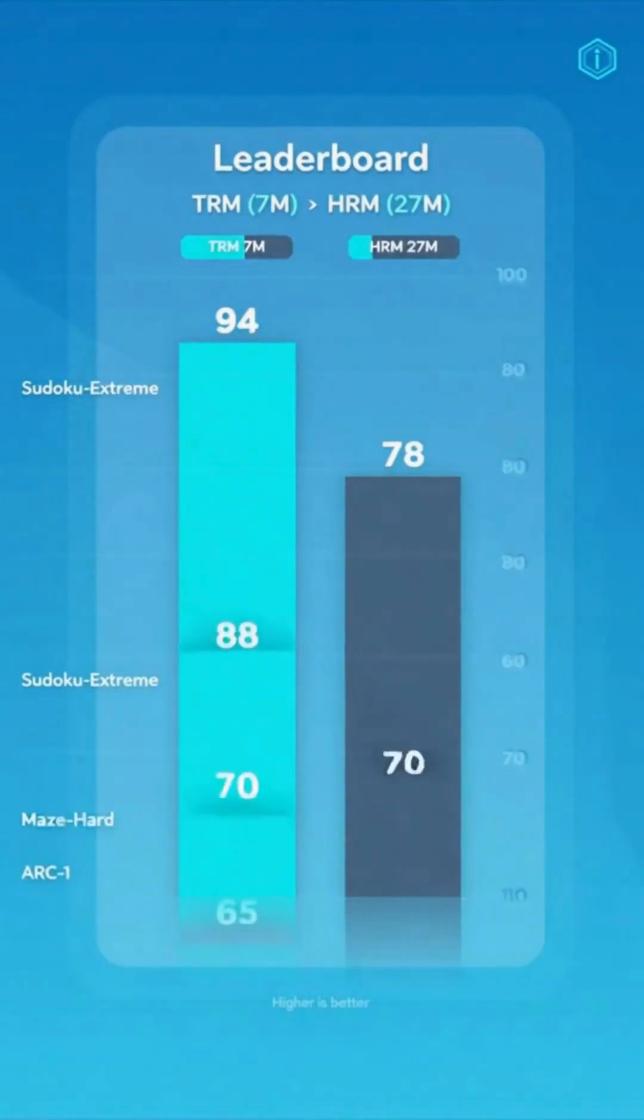TRM achieves impressive scores on Sudoku, Mets, and ARC benchmarks with only 7 million parameters.